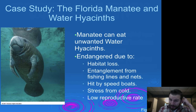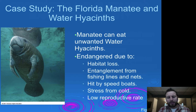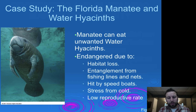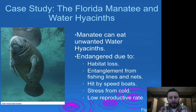Looking at the manatee: they feed along those seagrass beds mentioned earlier, but are highly susceptible to human activity. Habitat loss is one of the biggest threats, along with entanglement in fishing lines, being hit by high-speed boats, stress from cold, and low reproductive rate. Algae blooms are also a major issue — in Florida, algae blooms produced toxins that adhered to seagrass, which manatees then ate. These red tides ended up killing a huge number of manatees, making algae blooms releasing toxins the biggest threat in the United States, especially Florida.